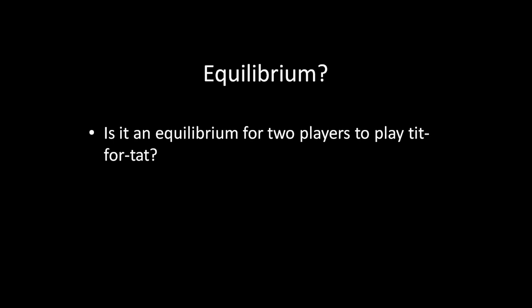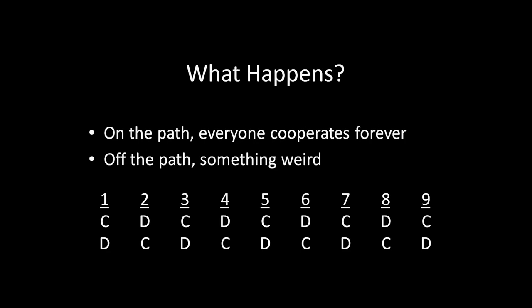So now that we know what a tit for tat strategy looks like, the question then becomes whether it is an equilibrium for two players to play tit for tat in this infinitely repeated prisoner's dilemma. Well, if we have two players playing tit for tat against each other, think about what happens. On the equilibrium path of play, everyone will cooperate forever. That's because you start out by cooperating, I start out by cooperating, and then in the second period, we duplicate what the other person did previously, which was to cooperate. So we cooperate in the second period, and so forth. So if we were to play tit for tat, then on the equilibrium path of play, supposing that it is an equilibrium, everyone would cooperate forever.